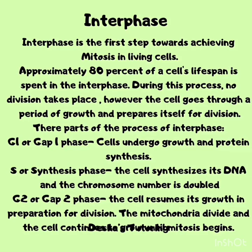Now let us look at interphase for meiosis. Interphase is the phase in which the cell spends most of its life cycle. During interphase, no division takes place. However, the cells go through a period of growth and prepare themselves for division. There are three parts: the G1 or GAP1 phase where the cell undergoes growth and protein synthesis; the S or synthesis phase where the cell synthesizes its DNA and the chromosome number is doubled; and the G2 or GAP2 phase where the cell resumes its growth in preparation for division.